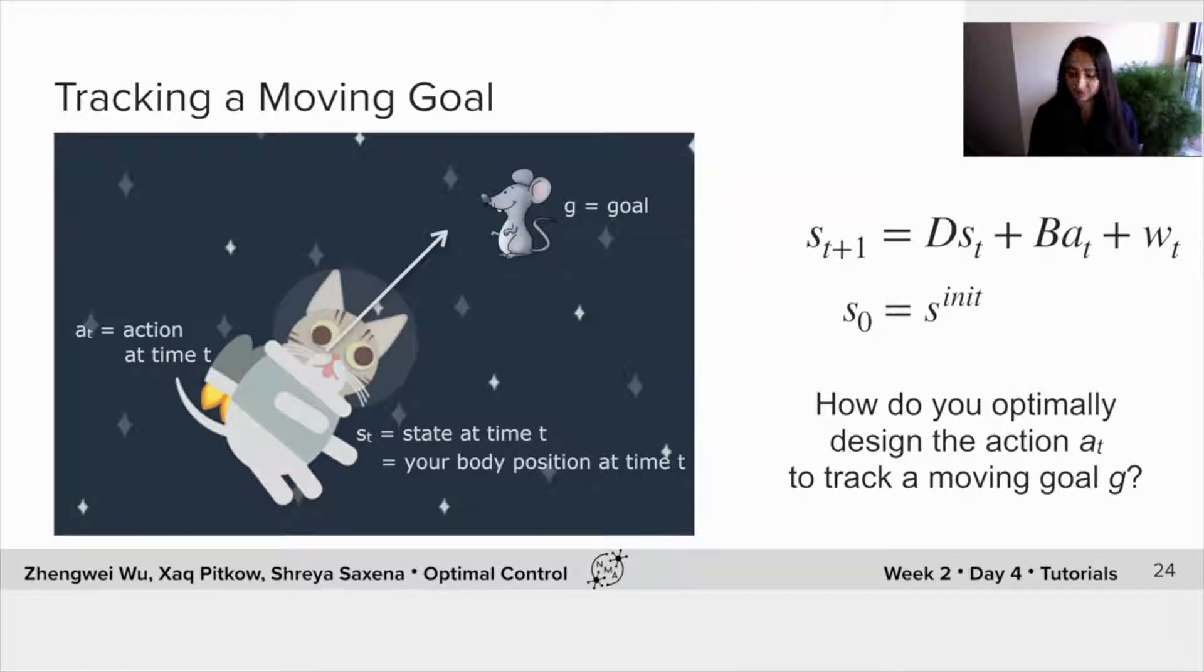Okay, so how would you in this case optimally design this action? Our setup is the same. So how would you design this action to track this moving goal G?